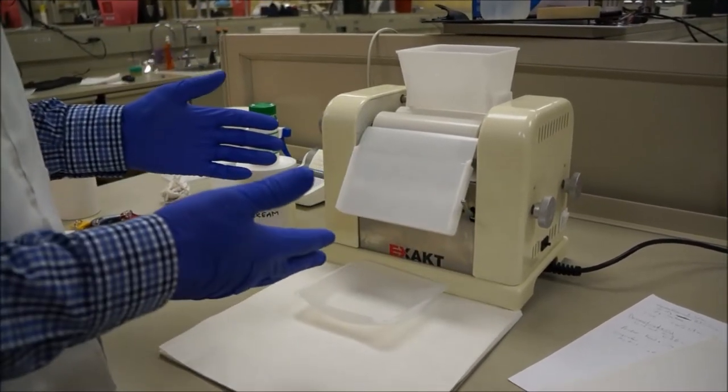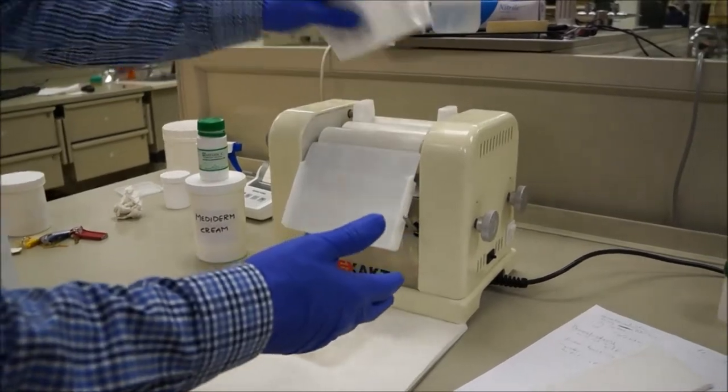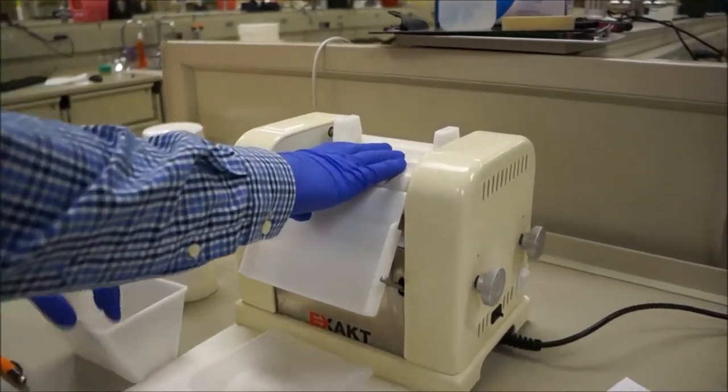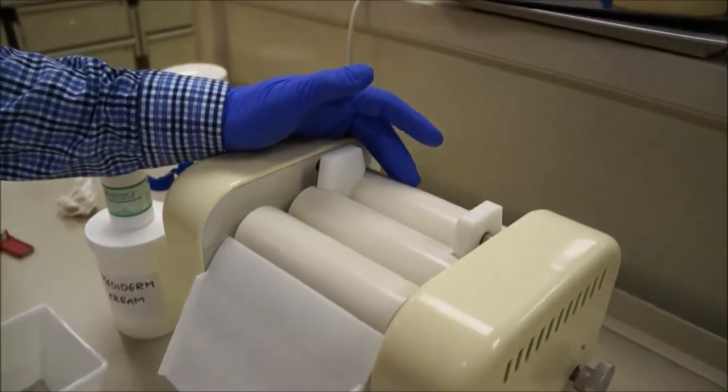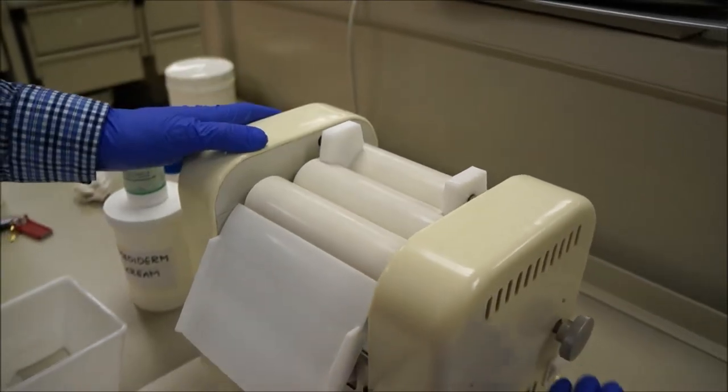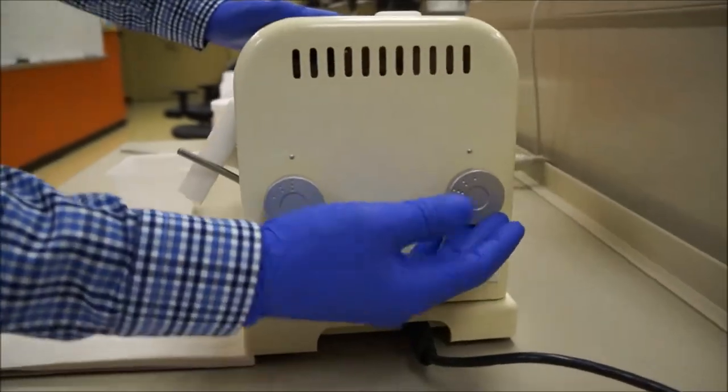Okay, so today we're going to be talking about the ointment mill. This is it as you can see. There are hard ceramic rollers here on the front, back, and in the middle. On each side there are adjustment knobs.